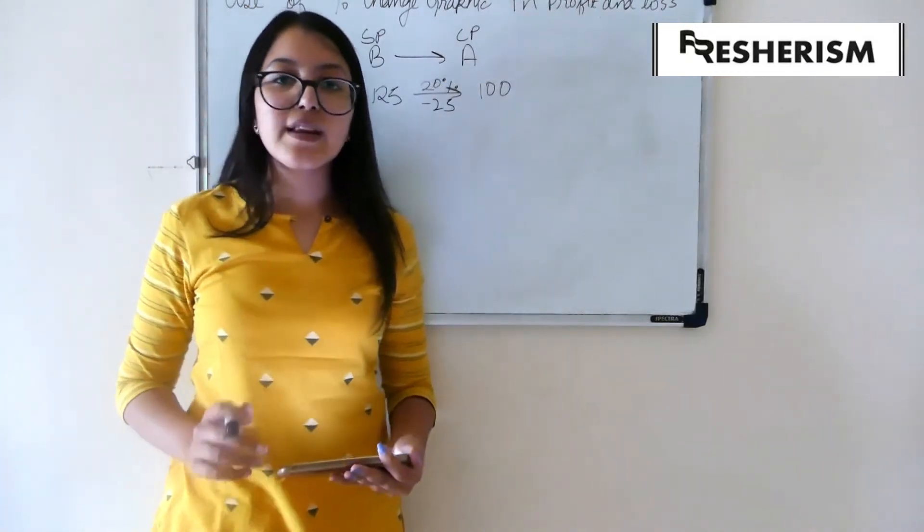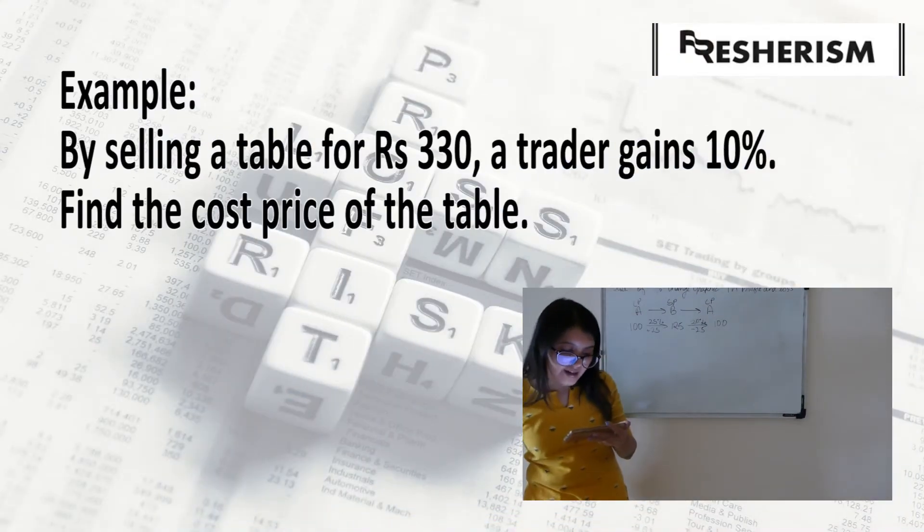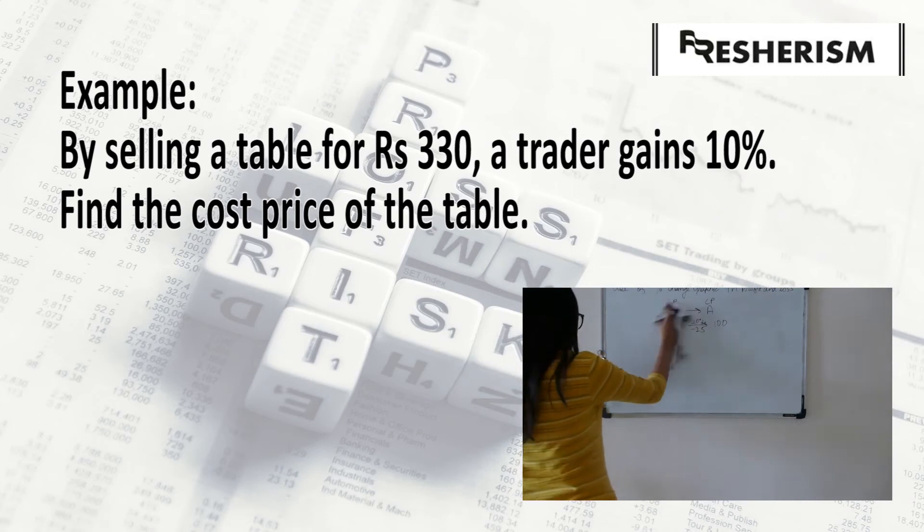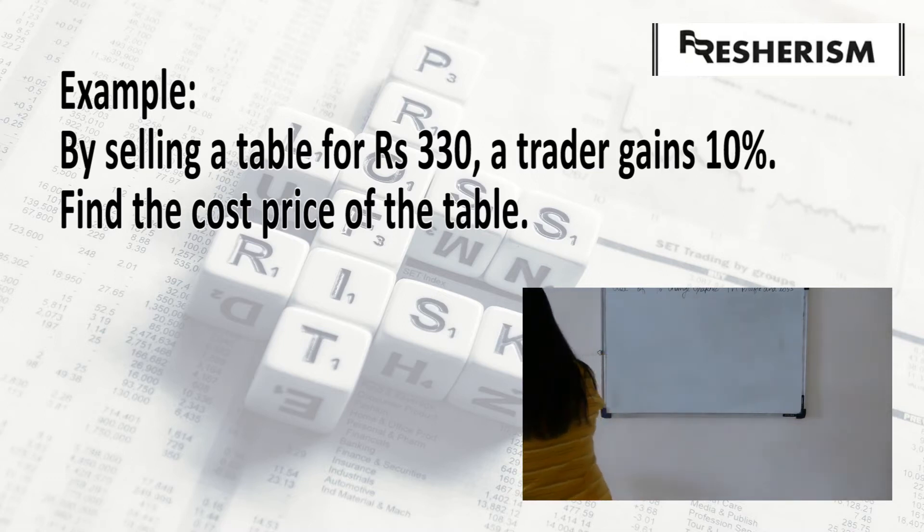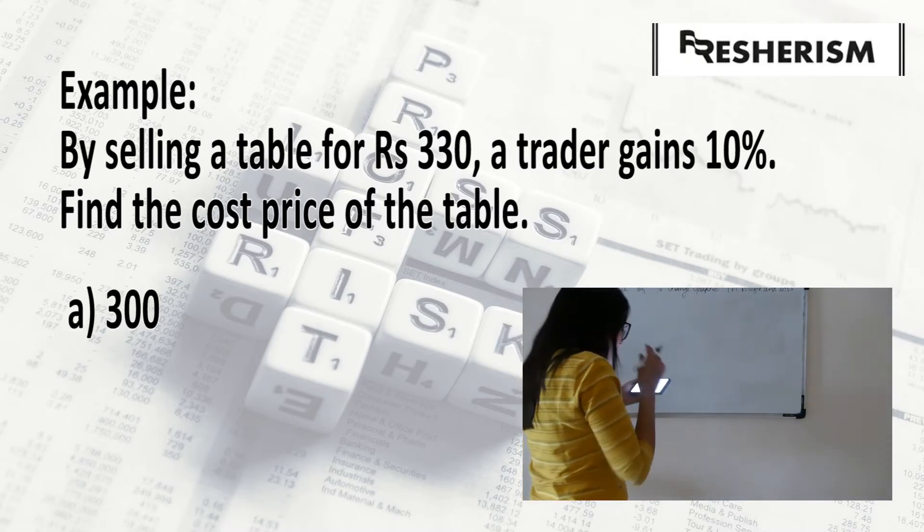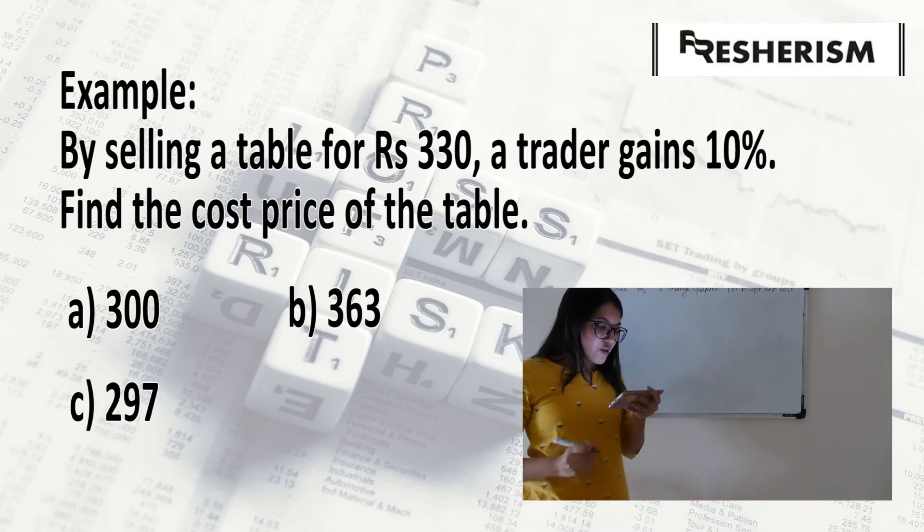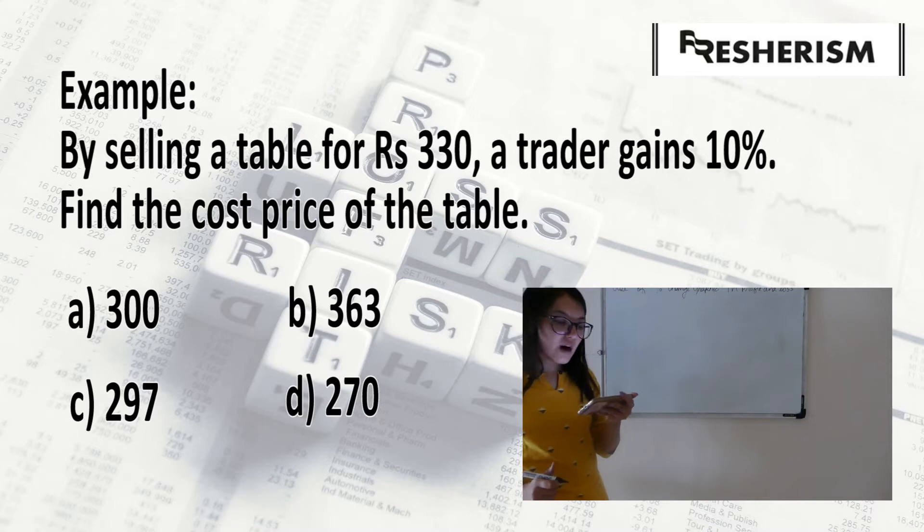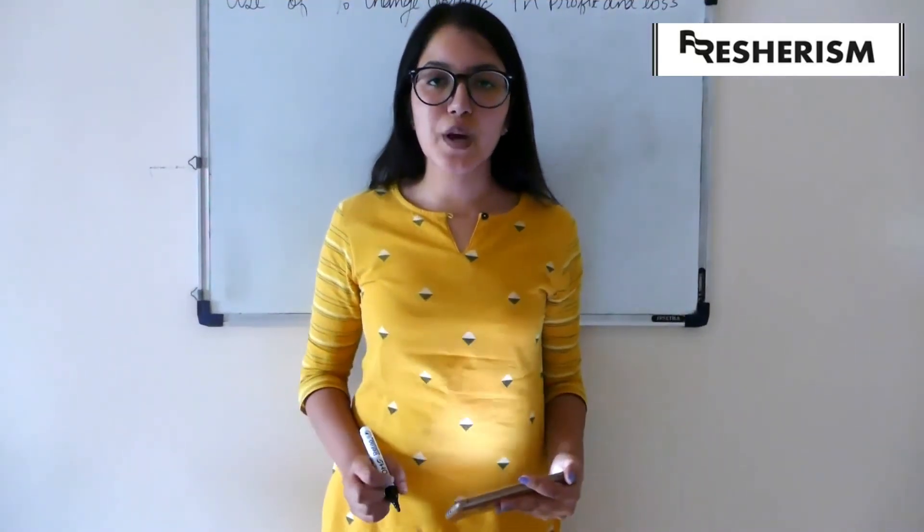The question on your screen now says, By selling a table for Rs. 330, a trader gains 10%. Find the cost price of the table. And our options are, option A 300, option B 363, option C 297, option D 217. Let us now look at the solution to this question.